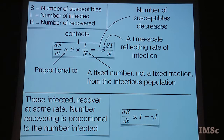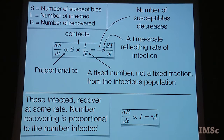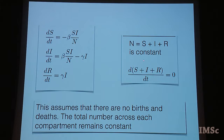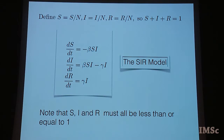The recovery term is also simple: those infected recover, so dR/dt is proportional to the number of infected recovering — equal to some proportionality constant gamma times I. I have now written down two terms. This is all I need for this model, because N = S + I + R is constant, so dS/dt + dI/dt + dR/dt must equal zero. This assumes no births or deaths — the total number across compartments remains constant. We then normalize S to S/N, I to I/N, R to R/N, so now S + I + R = 1. This model is called the SIR model.